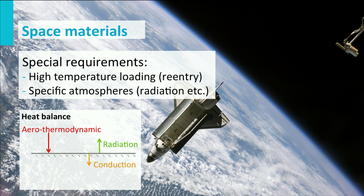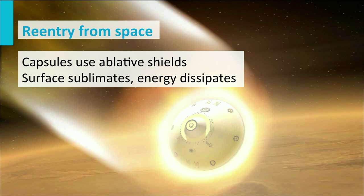Designers of space vehicles should also make precise energy balances. When heat is entering the vehicle, it should be absorbed or radiated back into space. When space vehicles make a re-entry into the atmosphere, the friction is very high and so are the temperatures. Without special measures, temperatures could be as high as 2000 degrees Celsius, which is too high for almost any material.